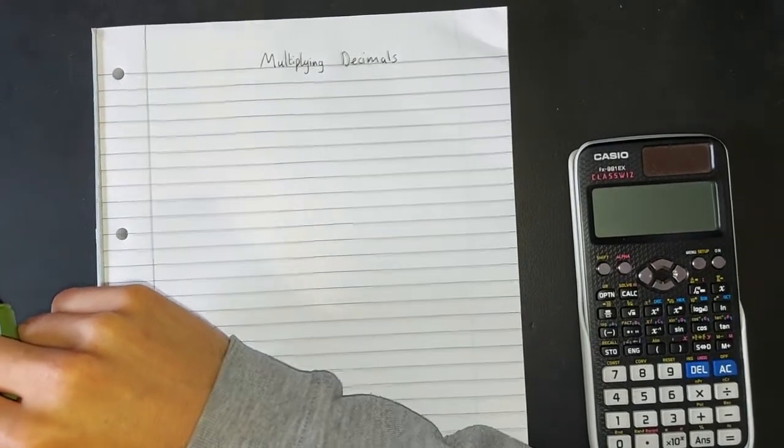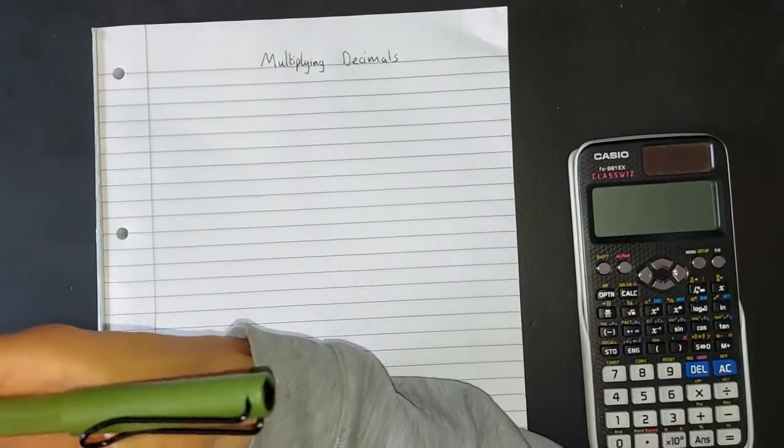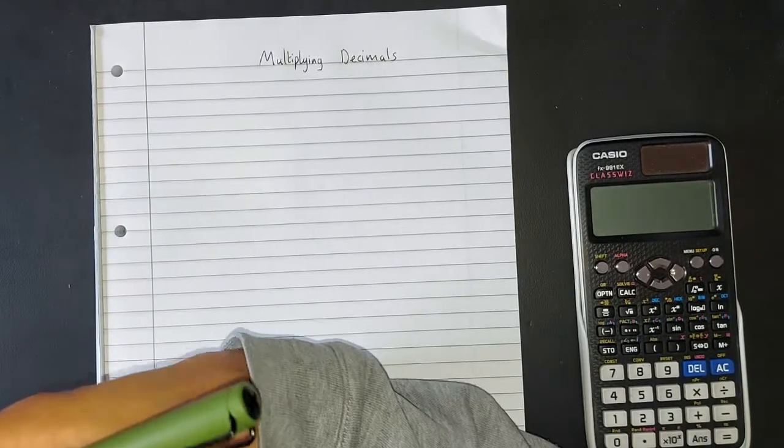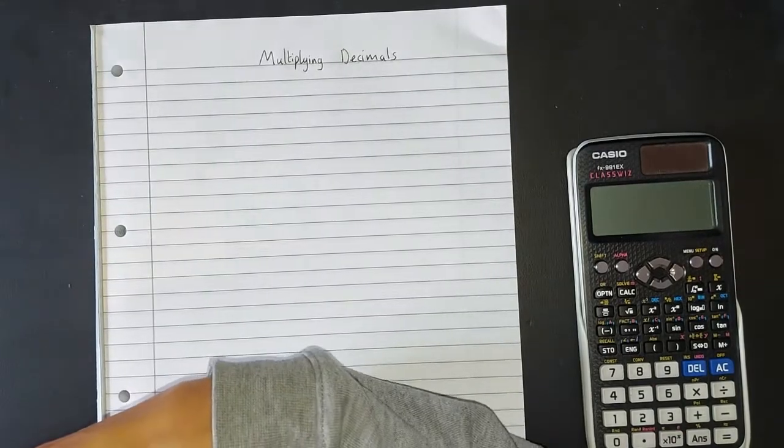So we're going to do a couple of examples using it. I'll show you why it's really useful, because this is where lots of people trip up when they're doing their column method. If you have decimals in the number, or you have lots of numbers in different place values, they struggle.